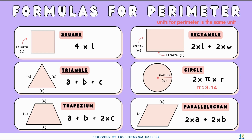A circle is a bit special where we need to use pi. Pi is going to be 3.14. The perimeter of a circle is also known as the circumference, so the circumference of a circle is going to be 2 times pi times the radius.